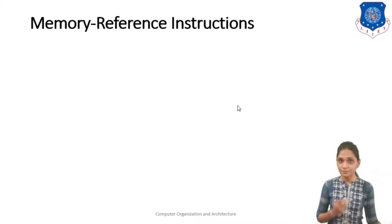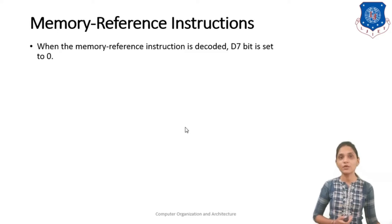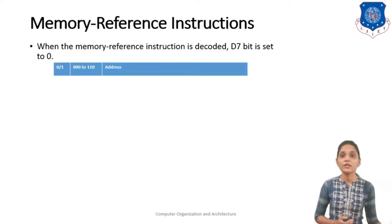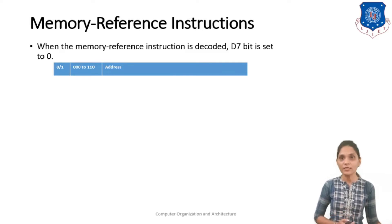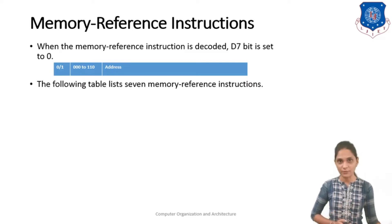Let me see what are the Memory Reference Instructions. When the Memory Reference Instruction is decoded, the D7 bit is set to 0, meaning you have control signals from D0 to D6. Here the I bit can be 0 or 1, your bits 12 to 14 can range from 000 to 110, and you have some address bits.